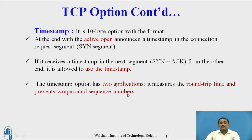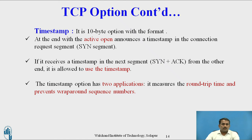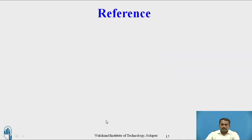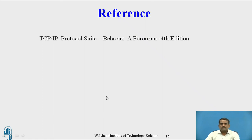Round trip time means: whenever the user wants to transfer data, if that data does not reach the destination, the user waits for the maximum time, then resends the data — that is the round trip time, which was already discussed in the previous video. Sequence numbers are used to identify how many packets have reached the destination; based on the sequence number, the receiver can identify which data has arrived. The timestamp format diagram shows kind containing 8, length, timestamp value, and timestamp echo reply fields.